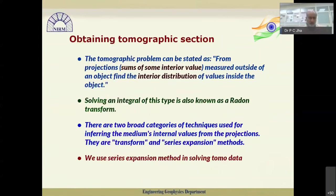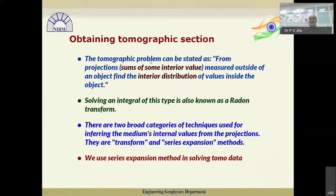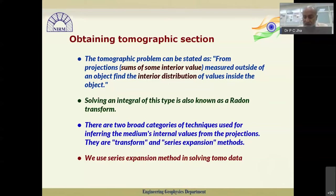The tomographic problem can be stated as: from projections — the sum of interior values of the waveform measured outside the object — find the interior distribution of values inside the object. Essentially, the waveform recorded outside the target has to be interpreted in terms of the distortion it underwent within the target to identify it. This type of problem solution is an integral equation solution known as the Radon transform. Two broad categories of techniques are used: transform methods and series expansion methods. We use series expansion methods in solving tomographic data.